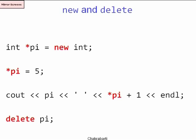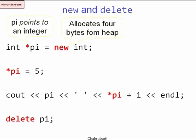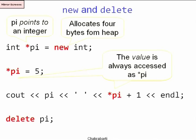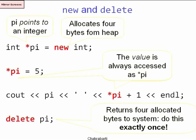So this was the example. We allocate a pointer to an integer called PI. PI itself is not an integer; when you access it using star PI, then you get an integer. You can say `int* PI = new int`, which allocates 4 bytes from the system. After that you can write into the cell pointed to by PI by saying `*PI = 5`, or you can read that cell by saying `*PI` and retrieve 5 back. You can do arithmetic with it just like an ordinary variable, and you can print both the address and the contents. The final `delete PI` returns the four allocated bytes to the system, and you have to do it exactly once.